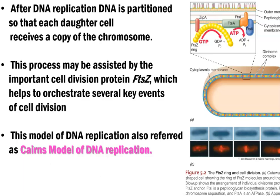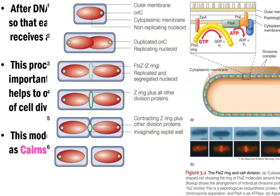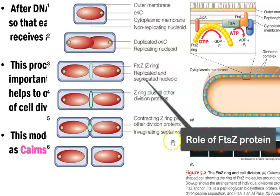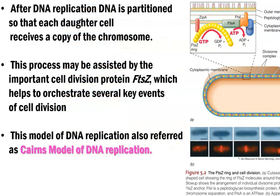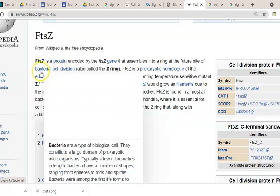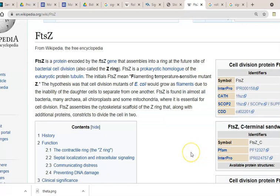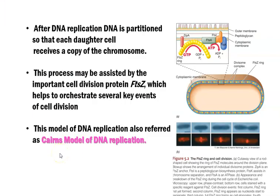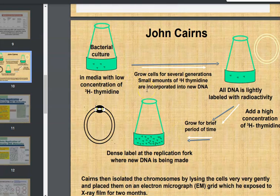This process is aided by a special cell division-related protein called FtsZ protein, which is universally present in bacteria. This protein is analogous to the tubulin protein in eukaryotic organisms and plays a major role in cell division, forming a ring during the division process. This process is sometimes referred to as the Cairns model of DNA replication, as Cairns performed experiments to prove that bidirectional replication takes place in organisms.